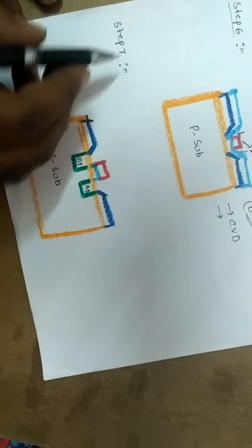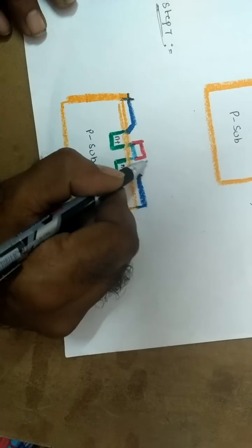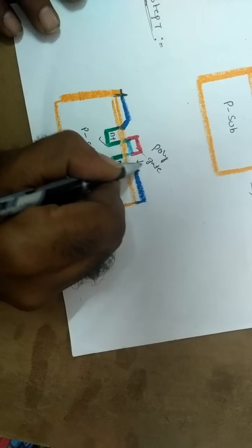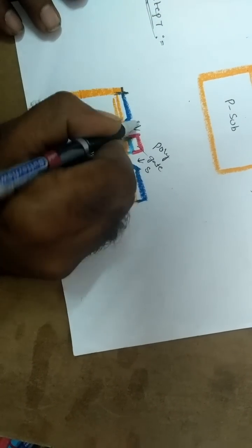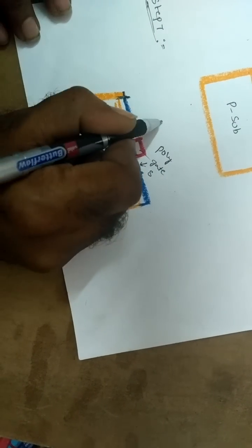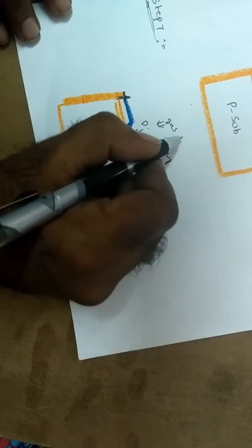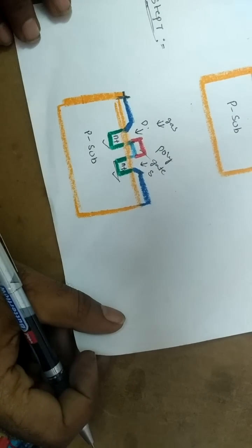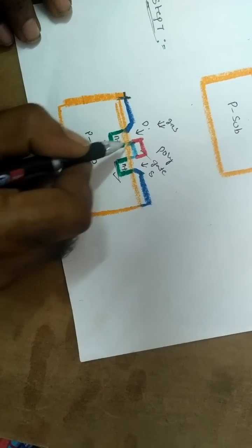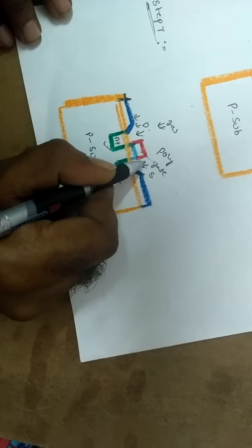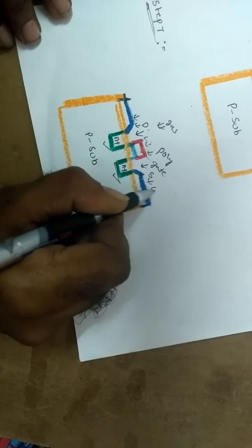Step 7: The exposed thin oxide is removed to clear regions into which N-type impurities are diffused or ion implanted to form the source and drain. Diffusion is achieved by heating the wafer to high temperatures and passing a gas containing the required impurities, such as phosphorus, over the surface. The polysilicon over the thin gate oxide and thick oxides over other regions act as masks preventing diffusion. This is known as the self-aligned process.